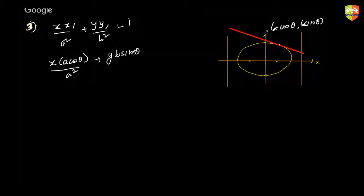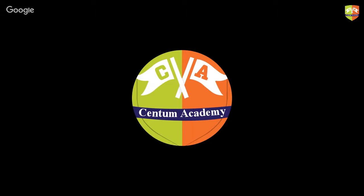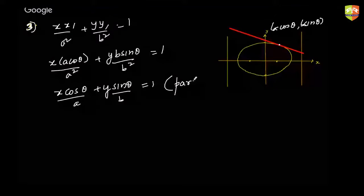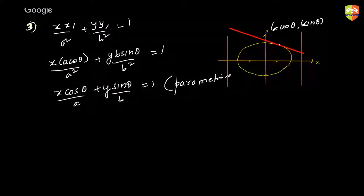The parametric form comes from the equation of the chord connecting two eccentric points θ and φ. This form is the most widely used when referring to the equation of the tangent to an ellipse at a parametric point. Let us now take up some questions on these various forms.